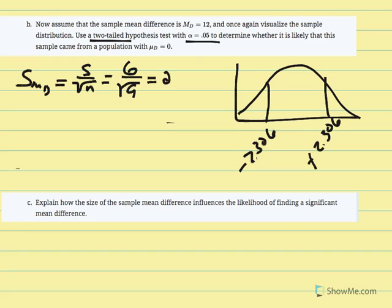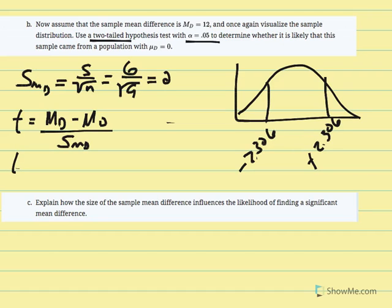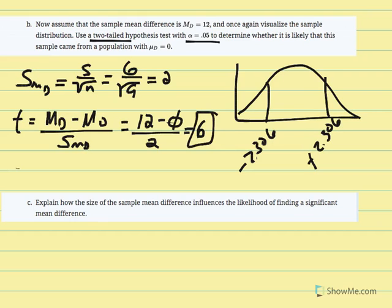With a mean difference of 12 minus 0, divided by 2, we get a t value of 6 — significantly larger than in our previous example. Placing 6 on the distribution, the center represents the hypothesized mean difference of zero, and our critical region is defined by 2.306. The value of 6 is far to the right, falling into our critical region.